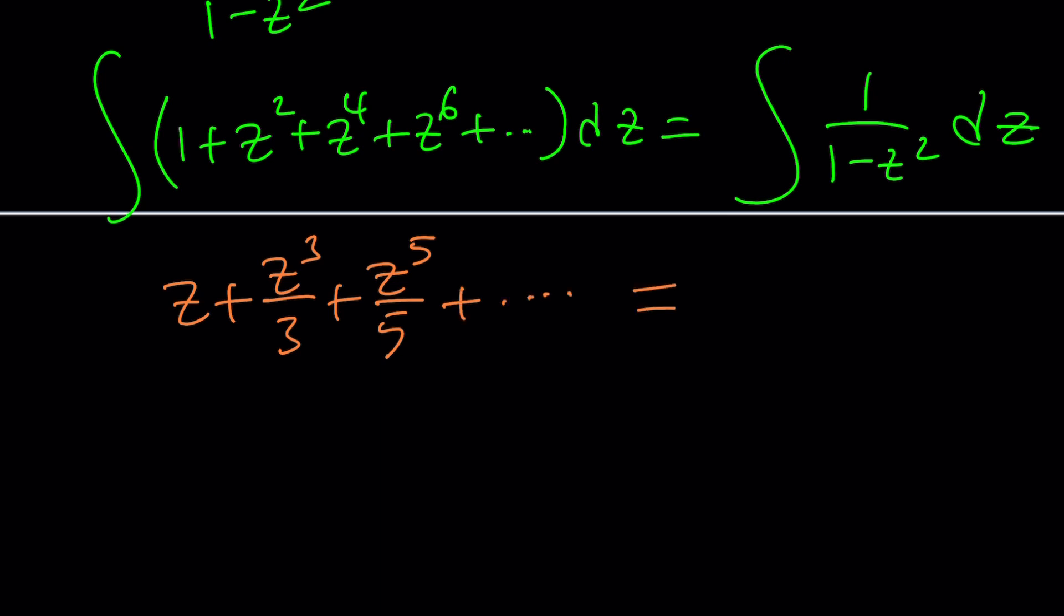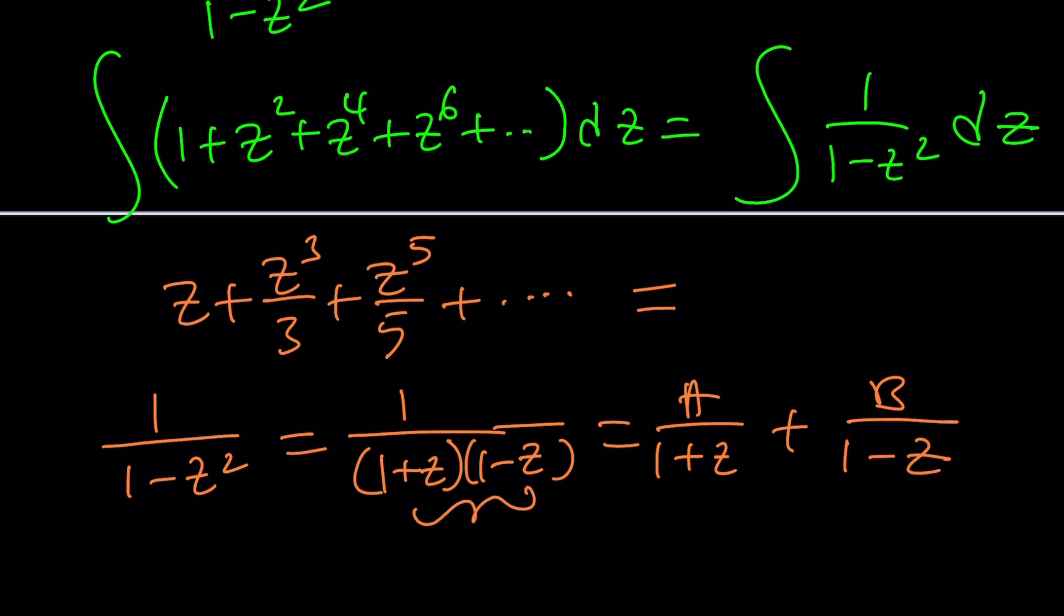Now the right hand side is an interesting integral. I can use partial fractions. I can write this as 1 over (1 + z) times (1 - z) from difference of two squares. And then split it up into two fractions whose denominators give us the denominator when multiplied. We can find the values of a and b by making a common denominator. But that's one way to do it and I'm going to show you another way because I think this is really cool.